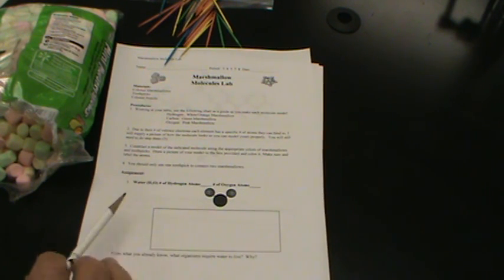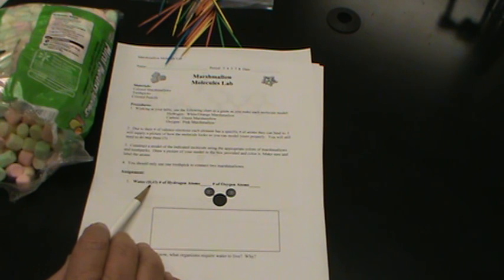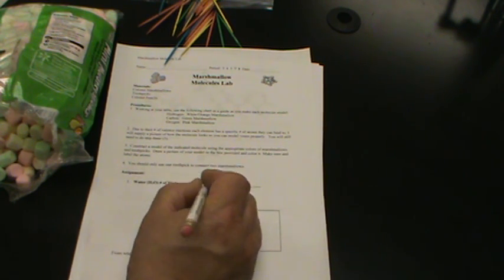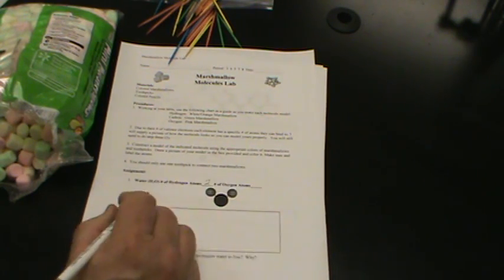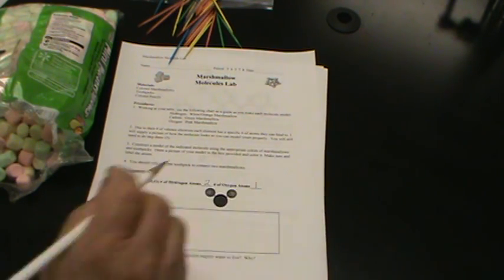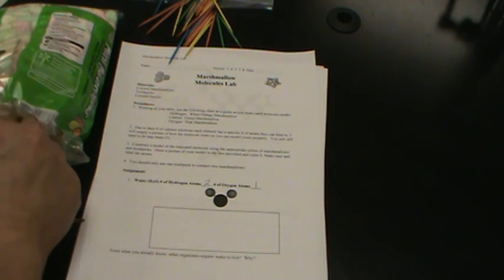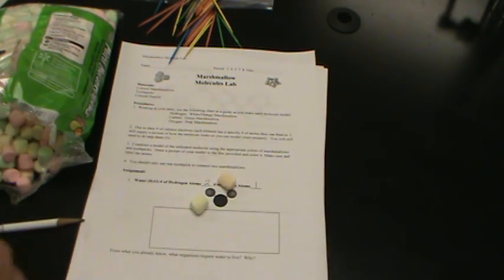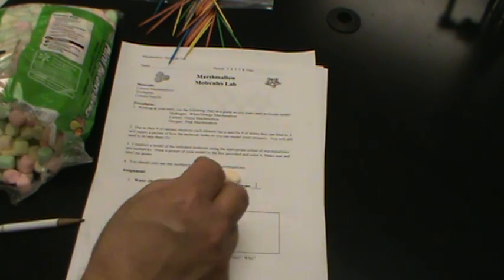Alright, so for our assignment, number one was a water molecule. Water, which is H2O, we wanted to know the number of hydrogen atoms, in this case there would be two, and the number of oxygen atoms, in this case there would be one. So I would need to get two yellow marshmallows out and one pink marshmallow.